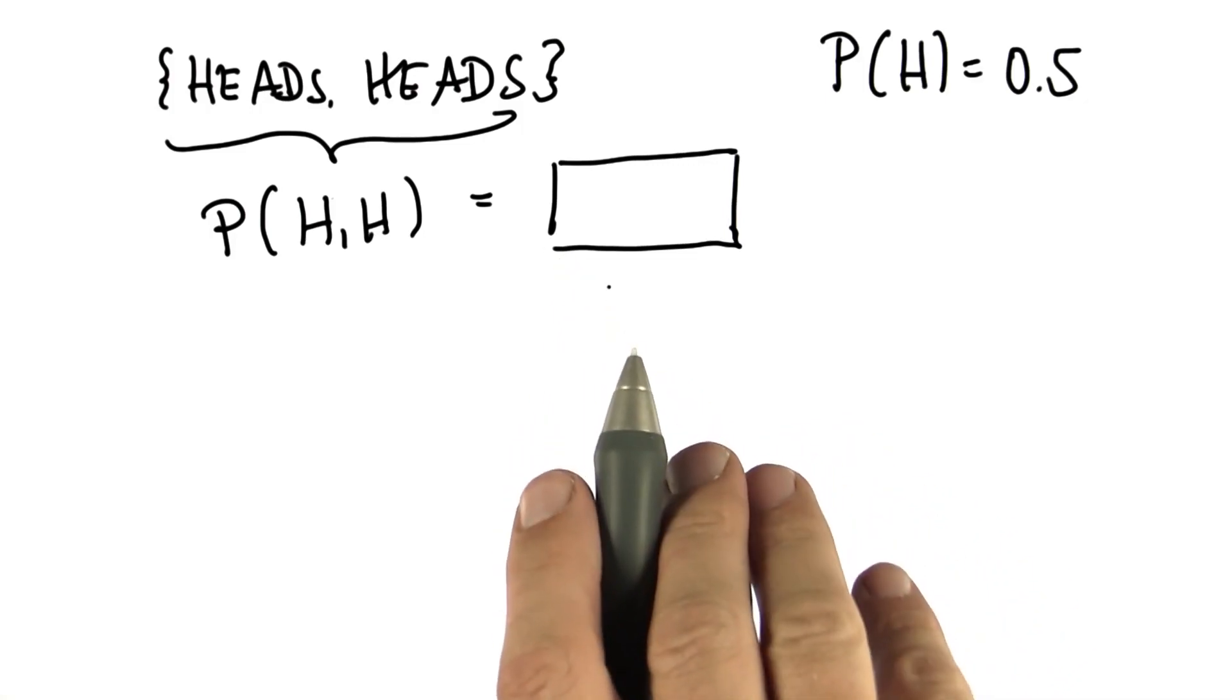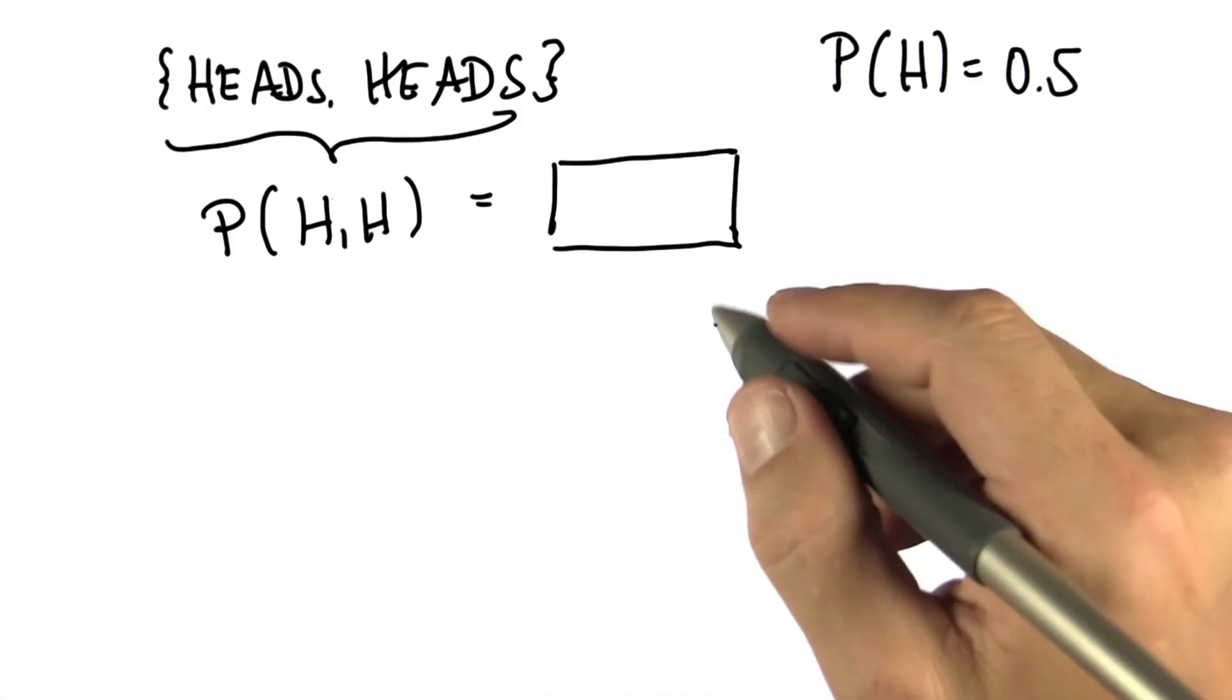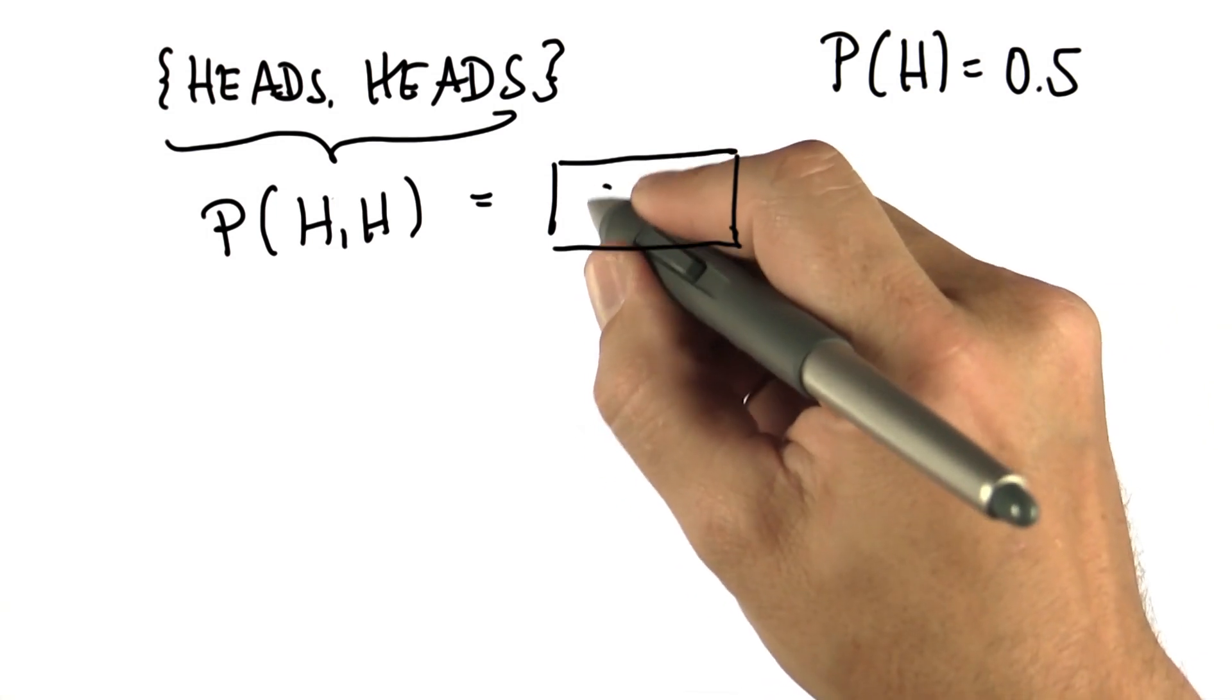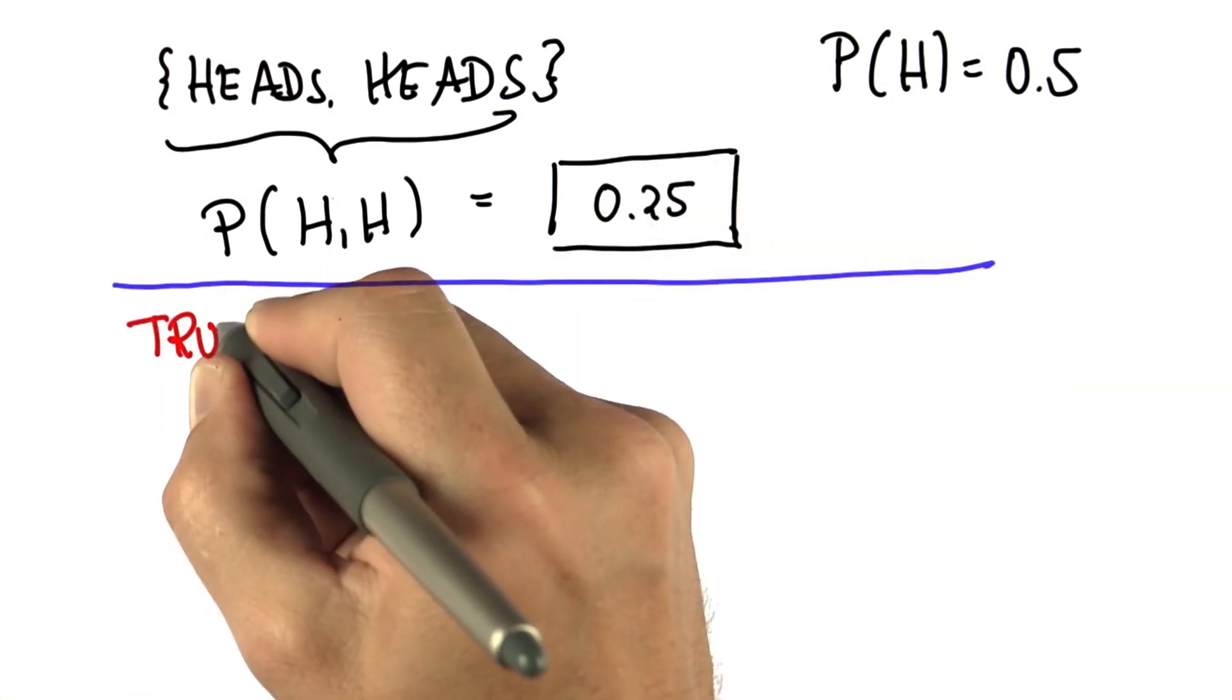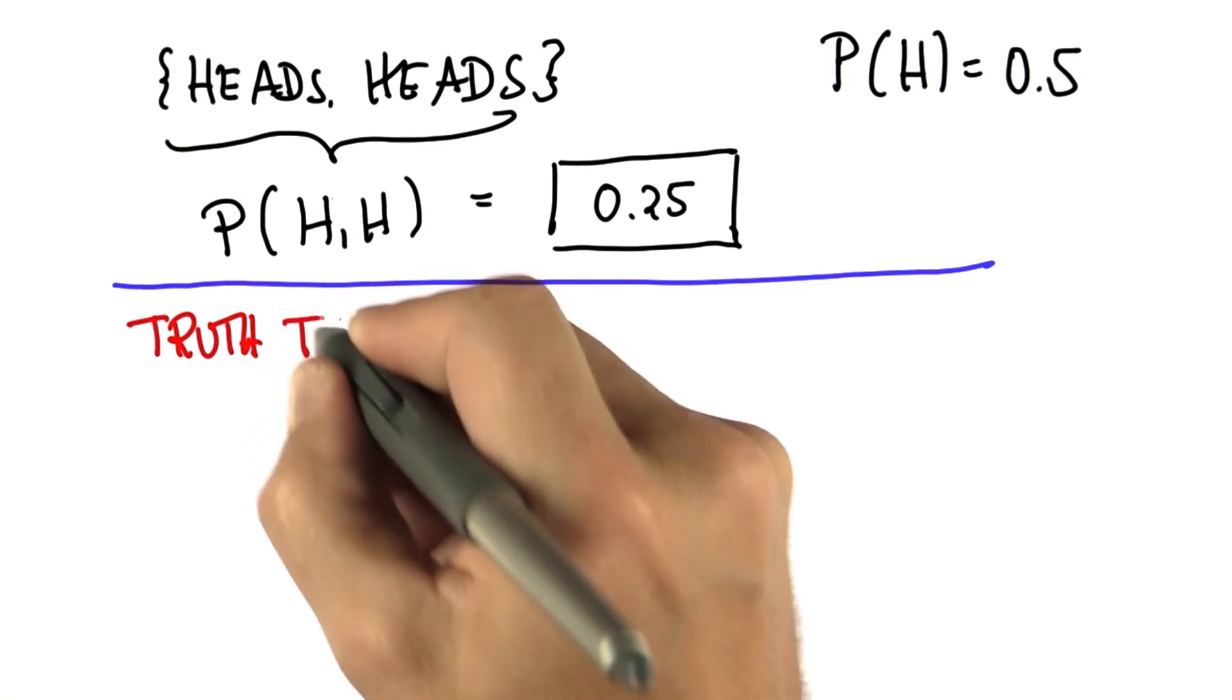That was a tricky question, and you couldn't really know the answer if you've never seen probability before. But the answer is 0.25, and I will derive it for you using something called a truth table.